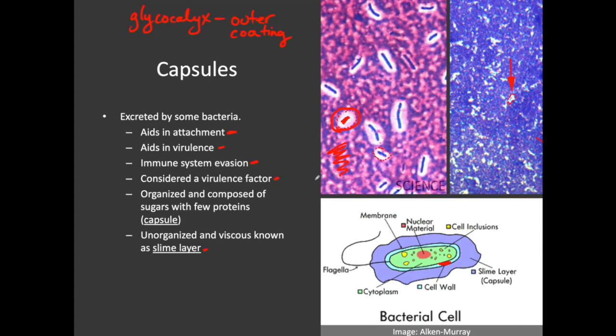Now that we have covered all of the external structures, attachments, and all of those parts of the bacteria, we're going to start in the next lecture looking at some more internal structures. We'll start with the cell wall and then move our way in from there. I hope you enjoyed this lecture on external structures as part of the cell morphology of bacteria, and I will see you in the next one. Have a good day.